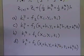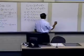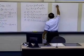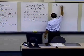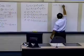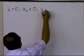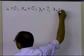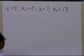Let's find out what value of y1 is, because we have i equal to 0. Your initial value of x is 0, your initial value of y is 7, and your initial value of z, which is the same as the derivative of y, is 13.